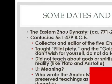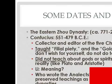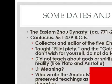Some dates and names: the Eastern Zhou Dynasty, 771 to 256 BCE. Confucius (551–479 BCE) was collector and editor of the Five Chinese Classics. He taught filial piety and the Golden Rule: 'What you don't wish for yourself, do not do to others.' He did not teach about gods, spirits, or the nature of reality — unlike Plato and Aristotle. His disciples wrote the Analects, preserving teachings as old as the Shang and Zhou dynasties.